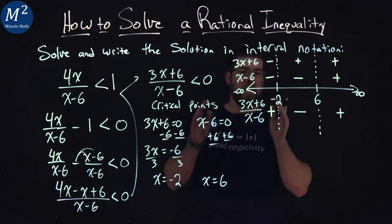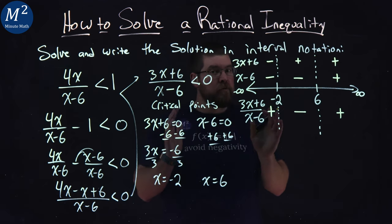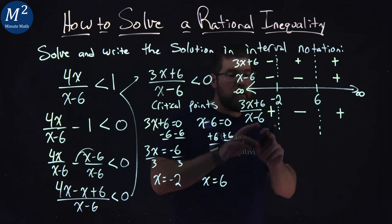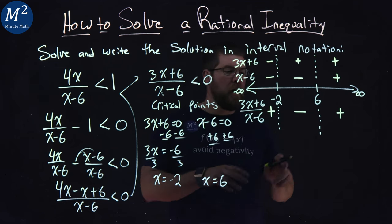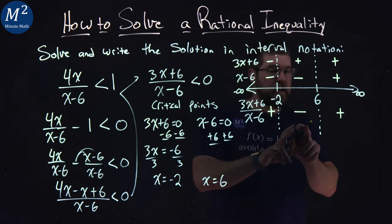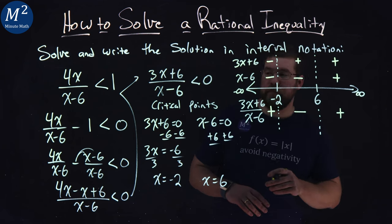So how does this help us? Well, we now know all numbers for x between negative infinity and negative 2 are positive. From negative 2 to 6, it's negative. And from 6 to positive infinity is positive.